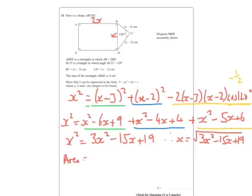Area equals 3X squared minus 15X plus 19, times 2 lots of this.